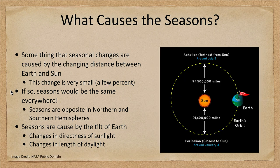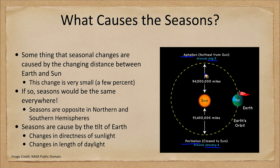What is the difference in the distance? We have perihelion when we are closest to the Sun, which occurs in January, and we are about a little over 91 million miles from the Sun. At aphelion, when we are the farthest around July 5th, we are about 94 million miles from the Sun. So it's about a 3 million mile difference, but 3 million miles out of nearly 100 million is really a very, very small change.